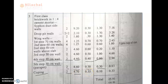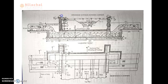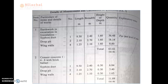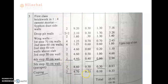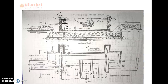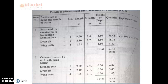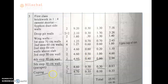The breadth is clearly indicated as 35 cm. Then we need to check the thickness of coping, which is indicated as 10 cm thick on both sides. The thickness of coping is 10 cm. The value of coping is 2 × 4.70 × 0.35 × 0.10, which is equal to 0.33 m³.